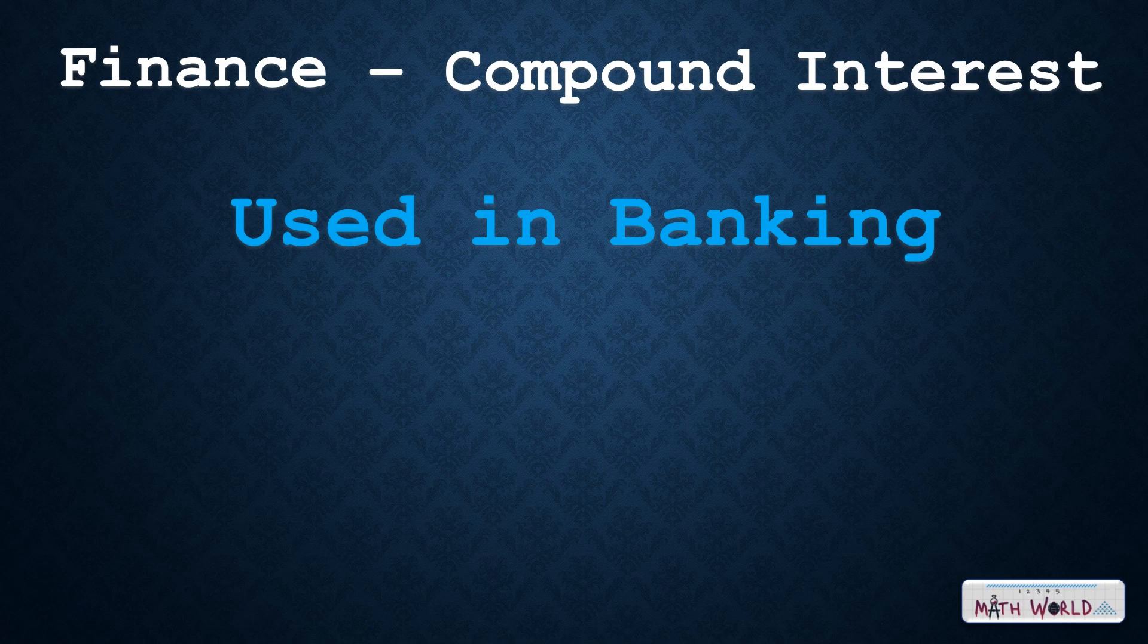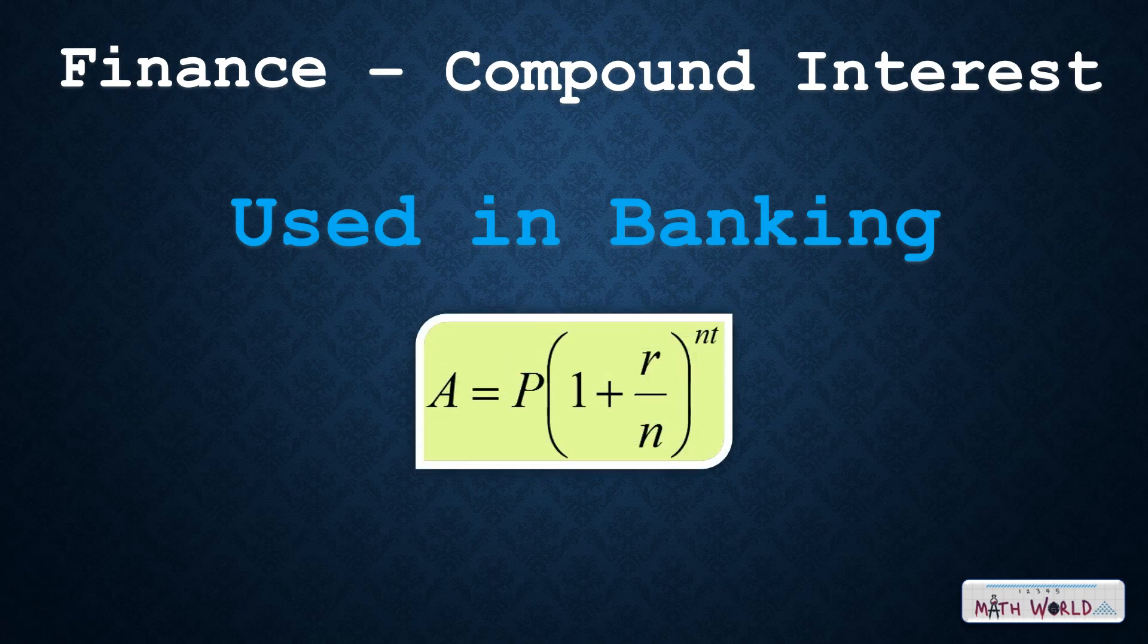Compound interest is the interest earned on the initial amount as well as on the interest earned in previous periods. The formula for compound interest is A equals P times (1 plus r/n) to the power of nt.